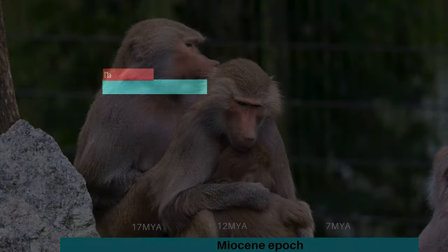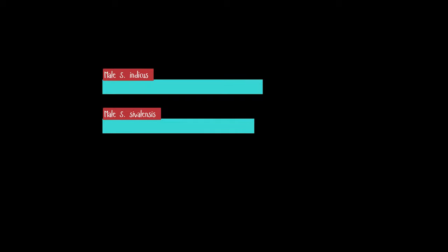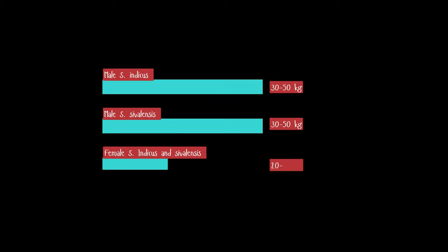For example, male Shivapithecus indicus and Shivapithecus sivalensis weighed between 30 to 50 kg while females weighed between 20 to 24 kg. In the case of Shivapithecus parvata, males were much heavier, weighing between 68 to 75 kg, and females weighed between 30 to 45 kg.